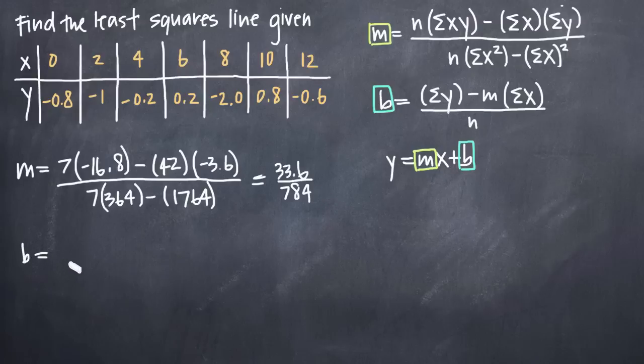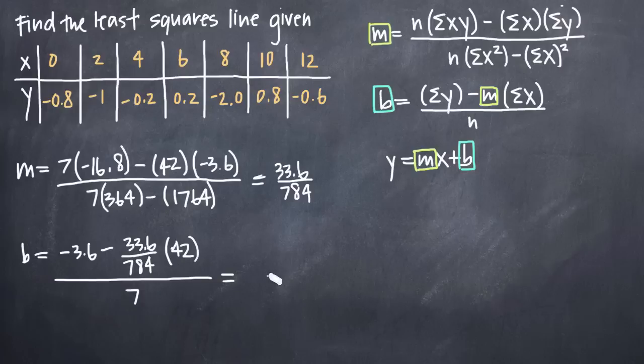When we look at b, when we solve for b, we're going to take the sum of all the y values. We already took that. It's right up here. And we know that it's negative 3.6. So we'll get negative 3.6 minus, now this formula includes m. And that's m that we solved for in the last step. So m, we know to be 33.6 divided by 784. It's especially important that you don't round this value because you're going to have to use it in the second formula. And if you round it here and then put it in this formula for b, then you're going to get a rounded answer for b that won't be accurate. So we have minus m and then we're multiplying that by the sum of all the x's, which is 42, all divided by the number of points, which is 7. So when we do the arithmetic on this one, we get a value for b of negative 5.4 over 7.